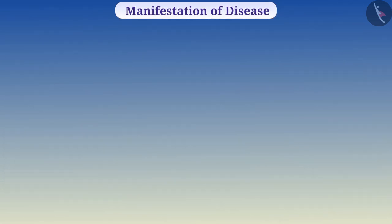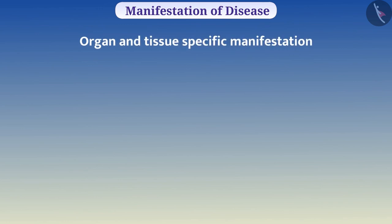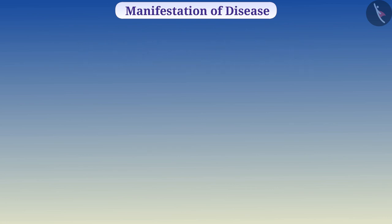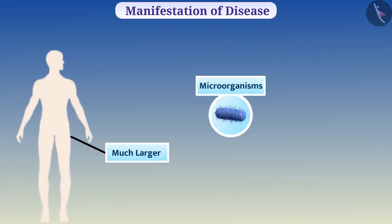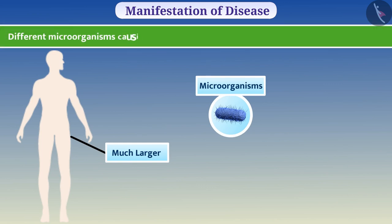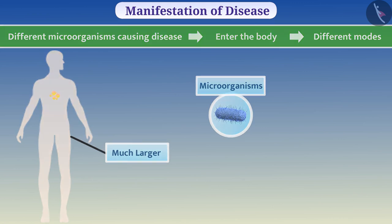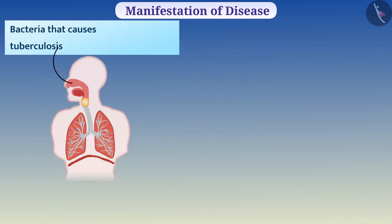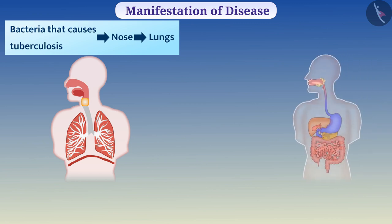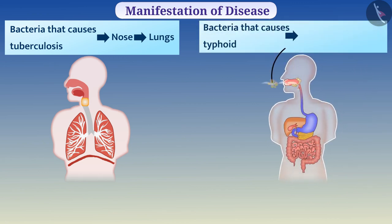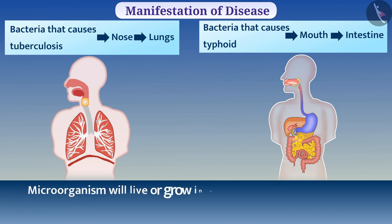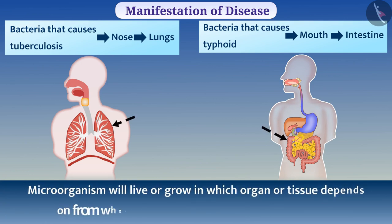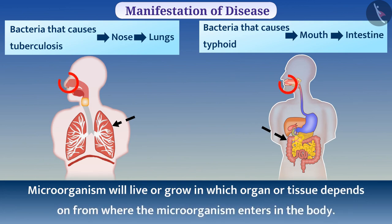Now let us understand organ and tissue specific manifestation in detail. Our body is much larger than microorganisms. Different microorganisms causing disease can enter the body by different modes and live in the body. For example, bacteria that cause tuberculosis enter through the nose via air and grow inside the lungs, and bacteria that cause typhoid enter via the mouth and grow in the intestine. Therefore, the organ or tissue where the microorganism lives depends on where it enters the body.